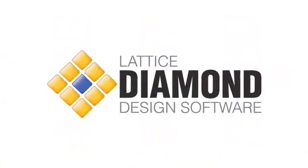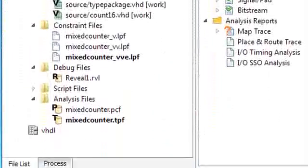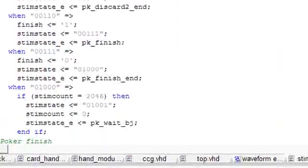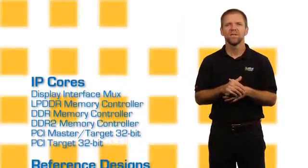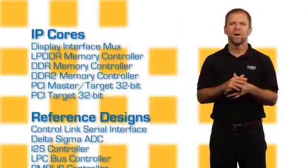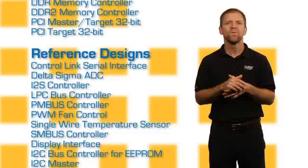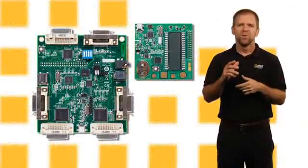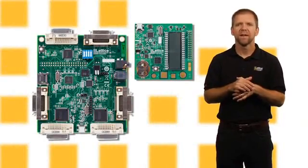You can start designing with Mach XO2 devices today using Lattice Diamond software, which can be freely downloaded from the Lattice website. Alternatively, you can use the free ISP Lever starter software that can also be downloaded from the Lattice website. To enable quick and efficient design and deployment of common functions in system and consumer applications, more than 20 reference designs using Mach XO2 devices can be downloaded free from the Lattice website. In addition, two development kits will be available to accelerate the evaluation of Mach XO2 devices.